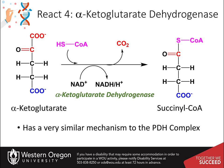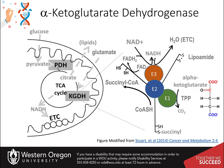Alpha-ketoglutarate dehydrogenase also liberates carbon dioxide and a molecule of NADH and a proton in the process of forming succinyl-CoA. Similar to the pyruvate dehydrogenase, it also uses coenzyme A as a substrate and thiamine pyrophosphate, lipoamide, FAD, and NAD as cofactors. Thiamine pyrophosphate attacks the alpha-ketoglutarate C2 carbonyl carbon, mediating the release of carbon dioxide that was originally from the acetate molecule. The remaining succinyl group is then transferred to the lipoamide cofactor, with partial reduction of the lipoamide also occurring at this step.